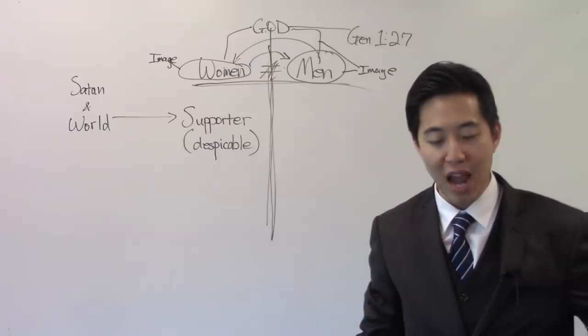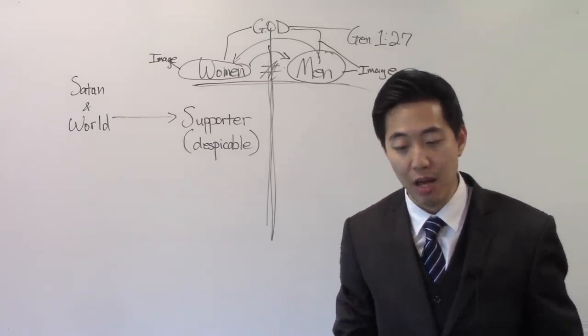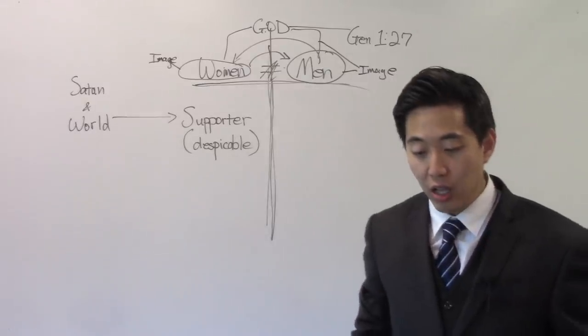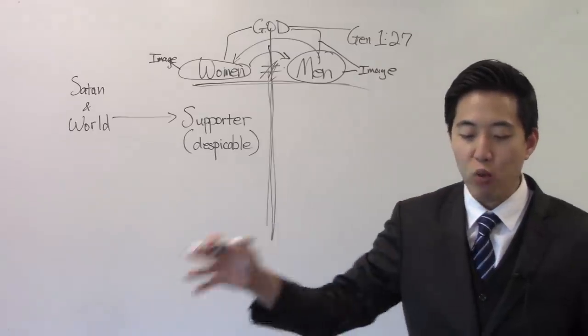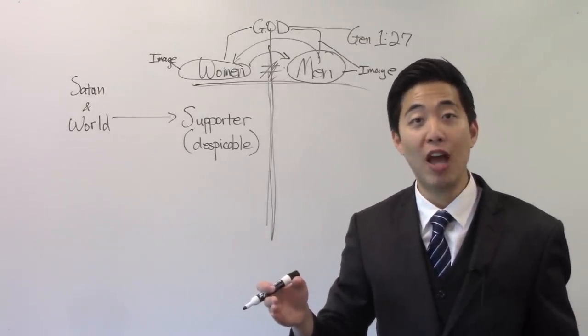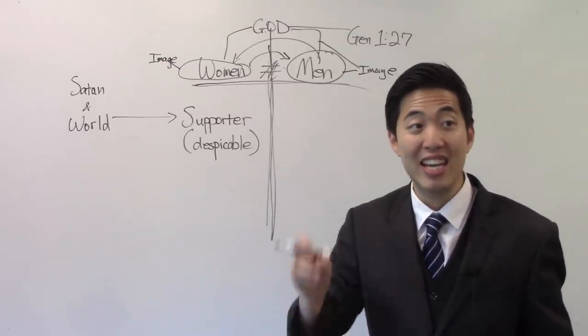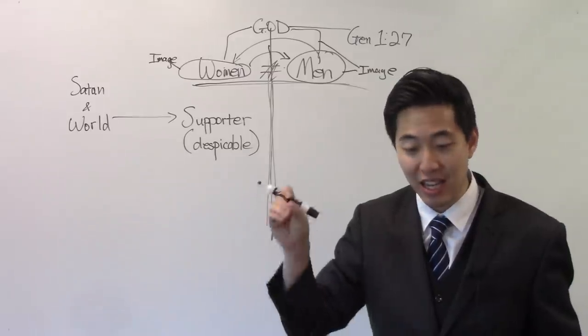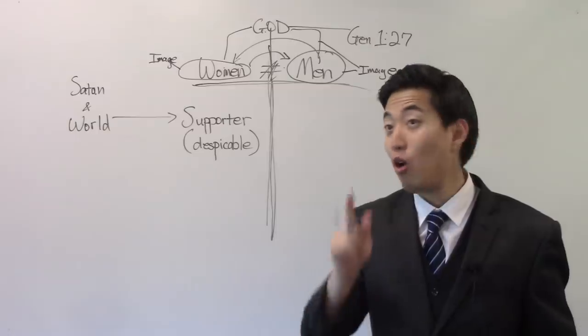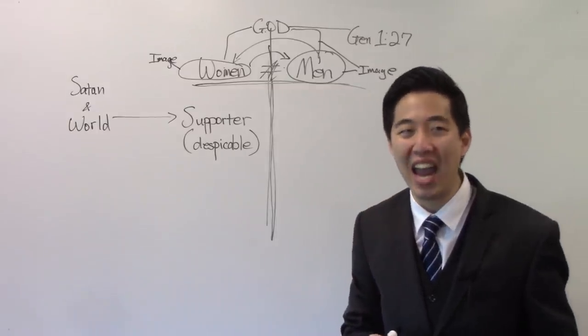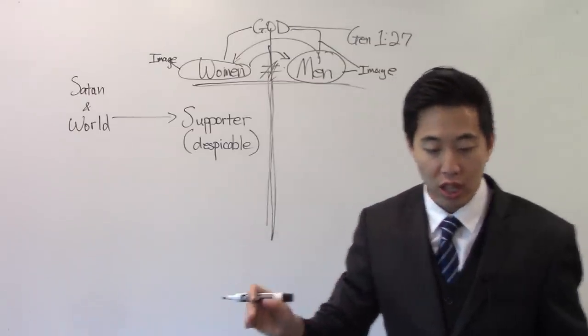So God created man in His own image. In the image of God created He Him. Male and female created He them. So this is supposedly their proof text that women are made in the image of God. Now, the simple answer is you just look at the verse and read it. Did it say that? Did it say women is in the image of God? Or is it man, if you're reading it? About women? He said He created her. He never said woman is made in God's image. So look at the verse.